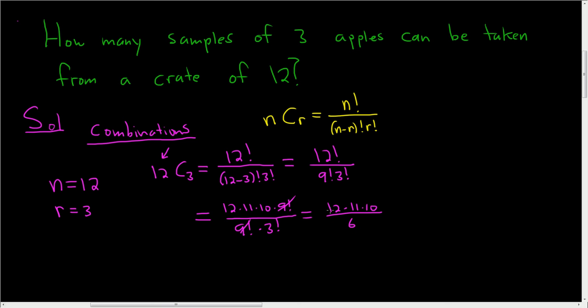6 goes into 12 two times, so we end up with 22, 2 times 11 is 22, times 10. So we get 220. So there are 220 ways to take samples of 3 apples from a crate of 12. I hope this helps.